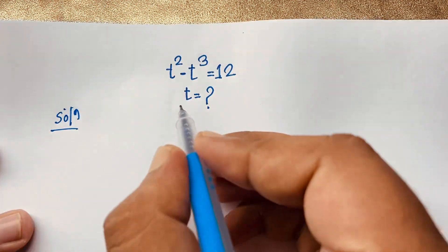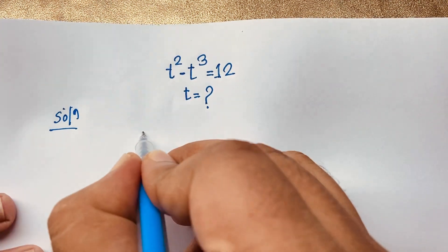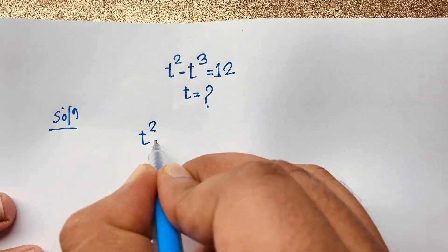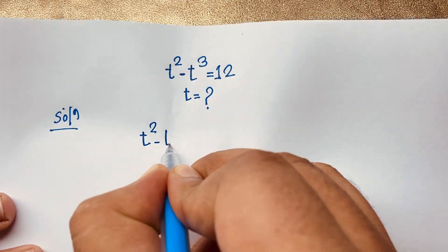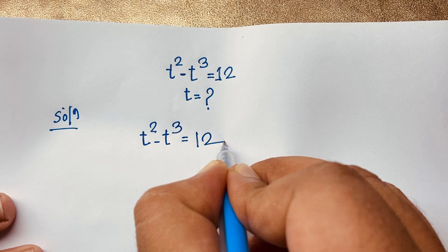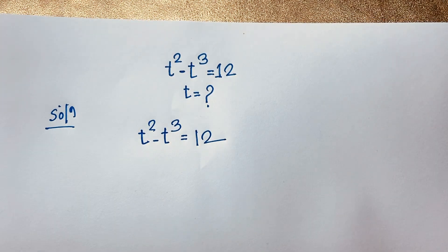Our question: t to the power 2 minus t to the power 3 is equal to 12. This is our question.